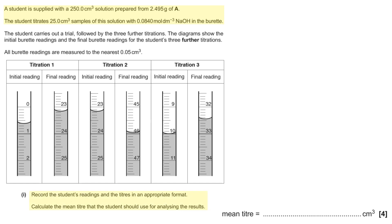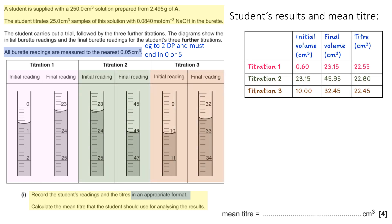So the next thing to do is to look at what we're required to do first. Record the student's readings and the titers in an appropriate format. So it's worth thinking about what appropriate format means. It tells you a bit further up that all burette readings are measured to the nearest 0.05 centimeters cubed. So that must mean that your titer has to be two decimal places and must end in zero or five. So if we take each reading and I put it in a different color so that you can see where each reading ends up in the table. So that's not the only way it can be represented, but you need to actually record a table. The expectation from OCR is that a table has actual grid lines and column headings and units.